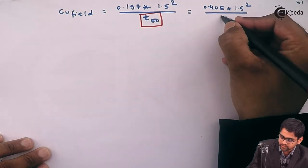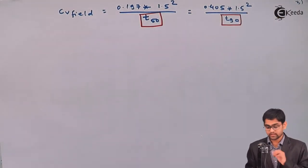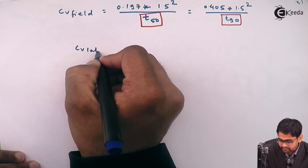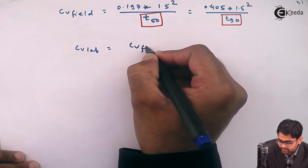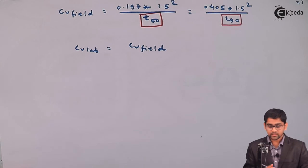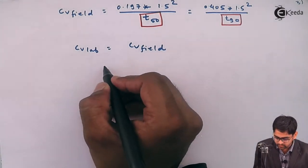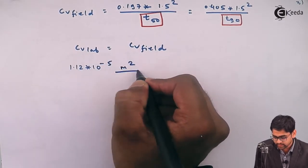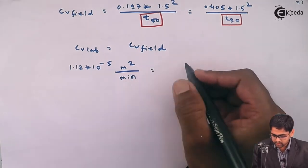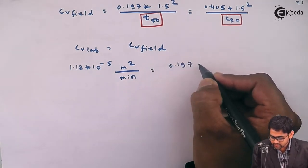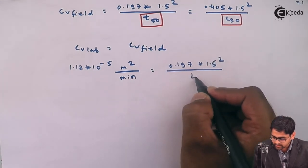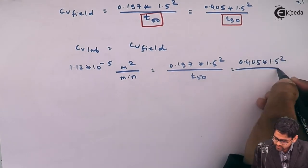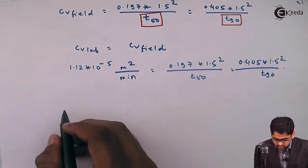The problem asks for the time required for 50% consolidation and for 70% consolidation in the field. C-V for lab and field remain the same because we took a true representative sample from the field. So: 1.12 × 10⁻⁵ = 0.197 × 1.5² / T-50 = 0.405 × 1.5² / T-70.